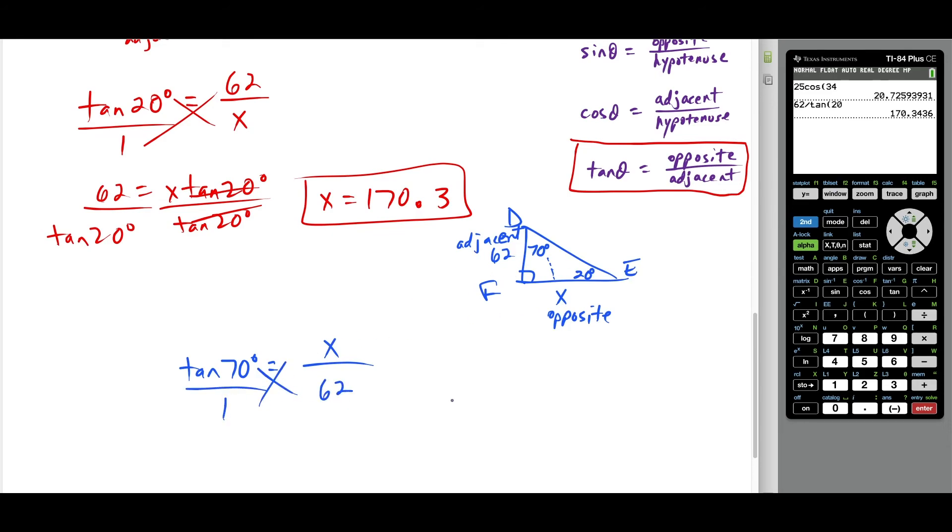So this time around, when I solve for x, I'm doing x times 1 is x equals 62 times tangent of 70 degrees. And notice if I do 62 times tangent of 70, we should get the same exact answer. And we do. We have matching answers here. So either way, we're going to get x equals 170.3 when we round to the nearest tenth place. But just know these questions leave some room for creativity and flexible ways of solving.